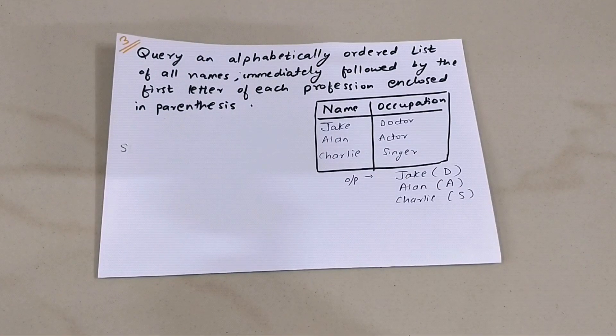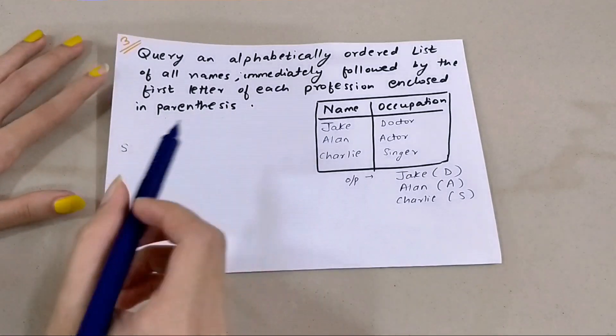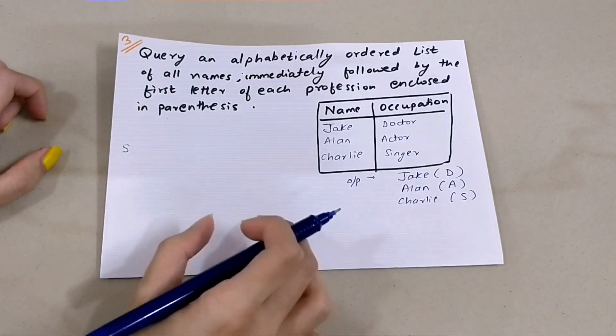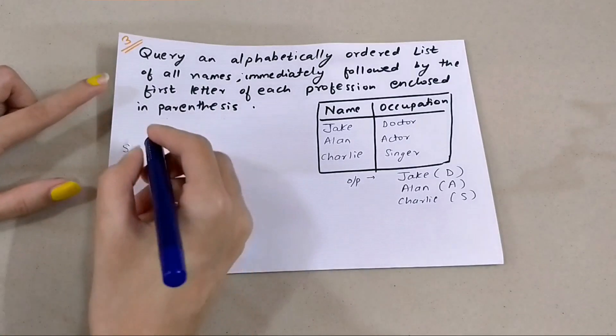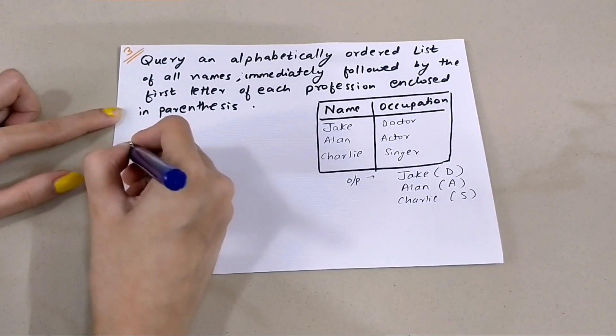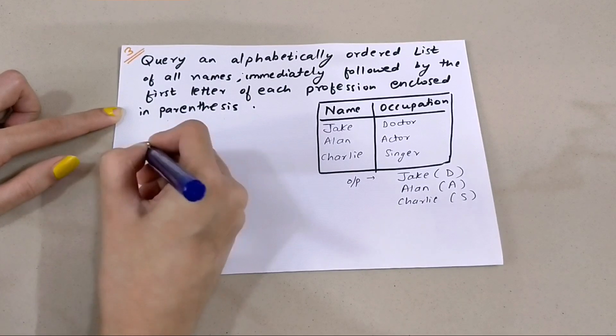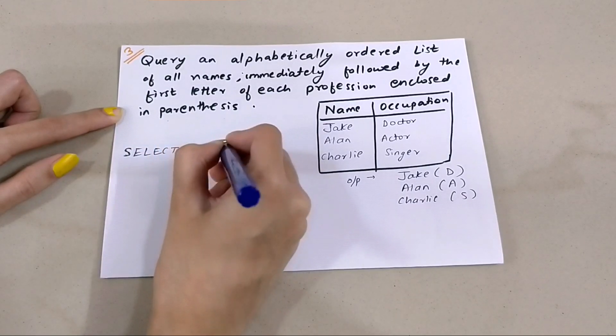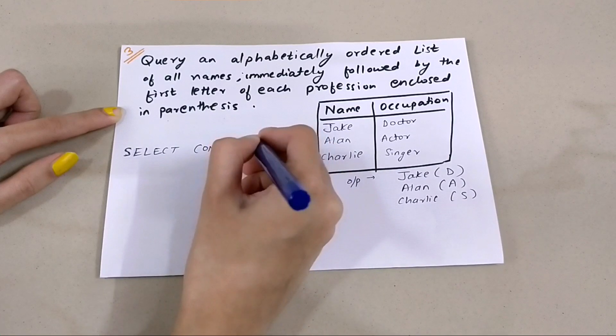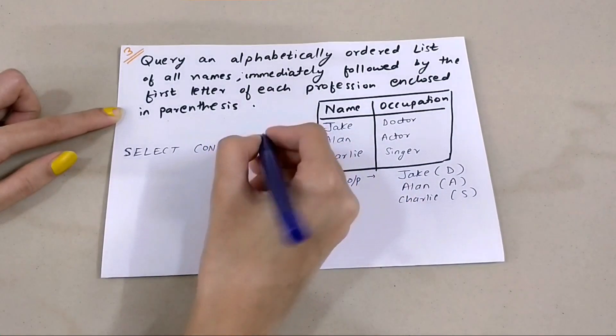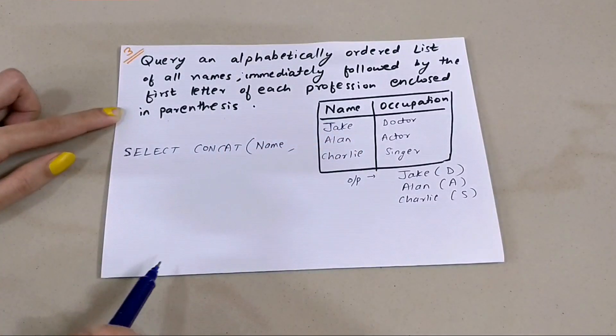For this we are going to use CONCAT. Whenever we want to combine a lot of columns and add some literal values to it, we use CONCAT. As we're seeing in this MySQL example, SELECT CONCAT - the first thing has to be the name, so I'm going to write 'name' simply.